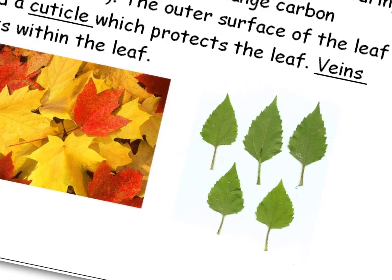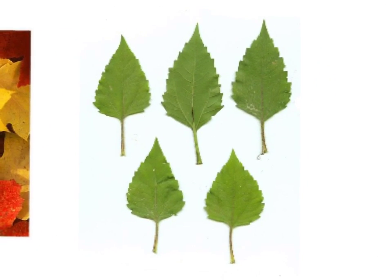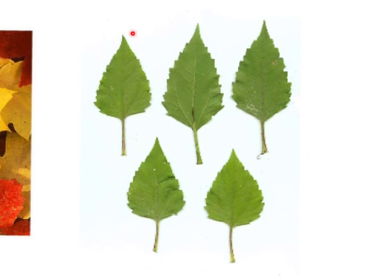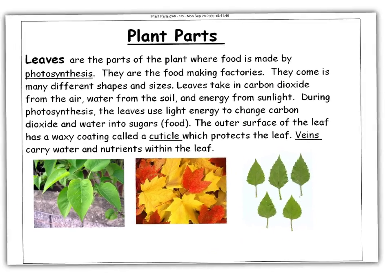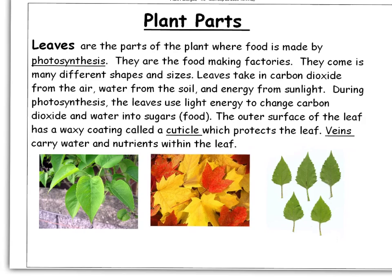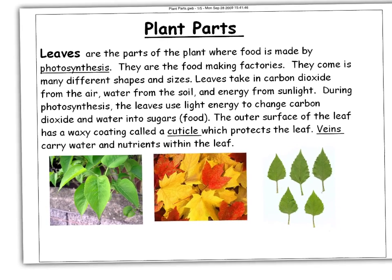If you look at the outer part of the leaf, you can see this section here — this is the cuticle of the leaf, the waxy part. And you see these things right here — these are the veins of the leaf. That's how water gets transported from the stem, comes through the stem into the veins, and that's what feeds the leaves water and nutrients. So the main function of leaves is they are the food-making factories of the plant.